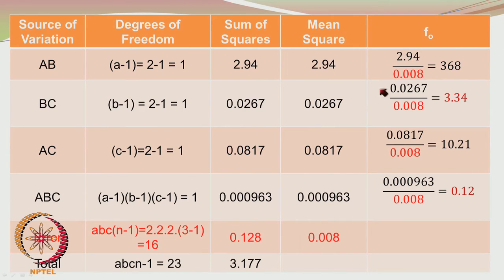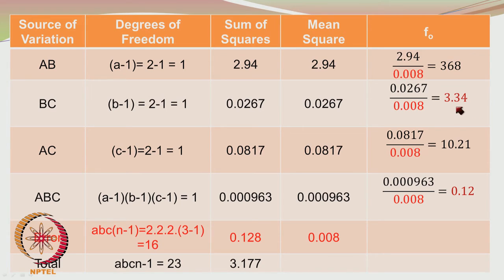The AB interaction is also quite significant, much higher than 4.49. However, the BC interaction is negligible because it lies in the acceptance region — its F value is only 3.34, which is below the critical value of 4.49, so we accept the null hypothesis that the BC interaction is negligible. The ABC interaction has F₀ = 0.12, which is considerably lower than 4.49, so we also accept the null hypothesis that the ABC interaction has no effect on the process.